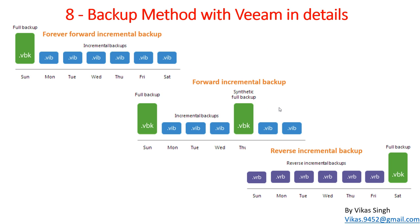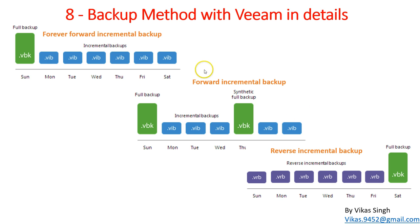The second is forward incremental backup, which is a special type where the first backup runs as a full backup and then all subsequent backups run as incremental. In between, when a synthetic full backup is scheduled, it takes a full backup — also called a synthetic full backup — saving a complete state of the VM. After that, incremental backups resume.